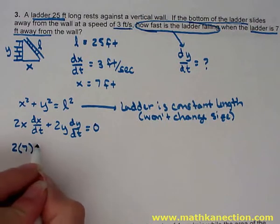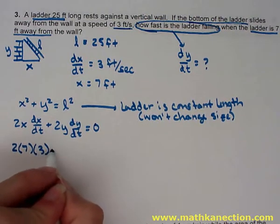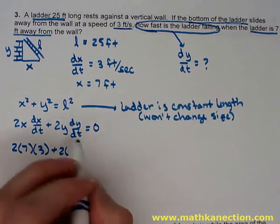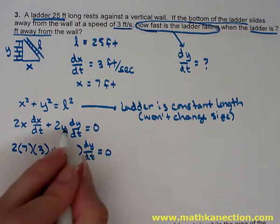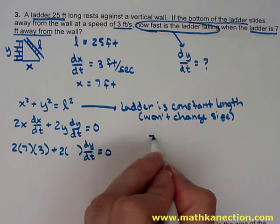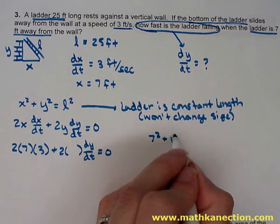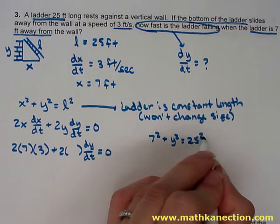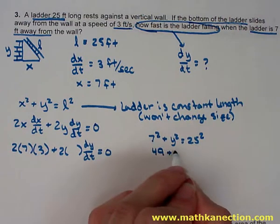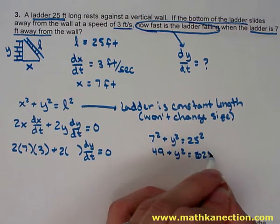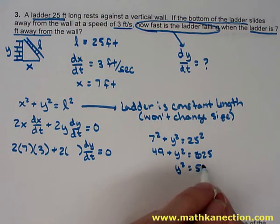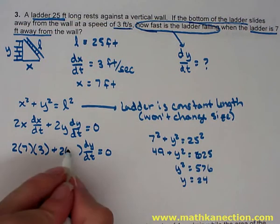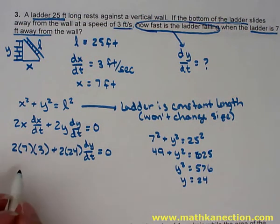Replacing in x equals 7 and dx/dt equals 3, plus 2y(dy/dt) equals 0. We don't have the value for y yet. Going back to the original equation, 7² + y² = 25², giving 49 + y² = 625, so y² = 576, meaning y equals 24. Replacing 24 back into the problem and now solving for dy/dt.